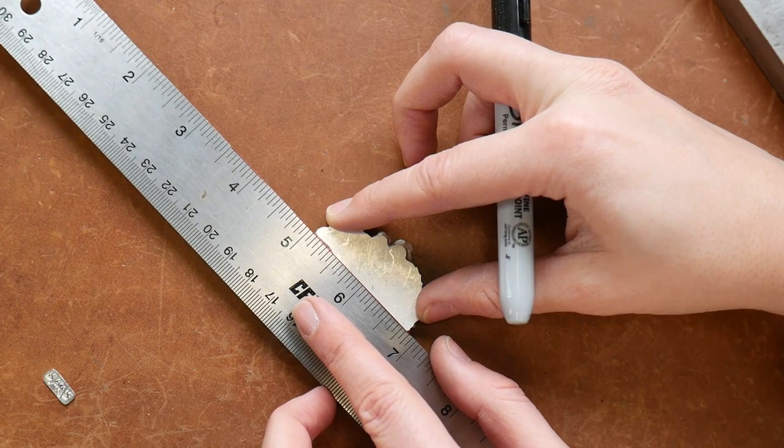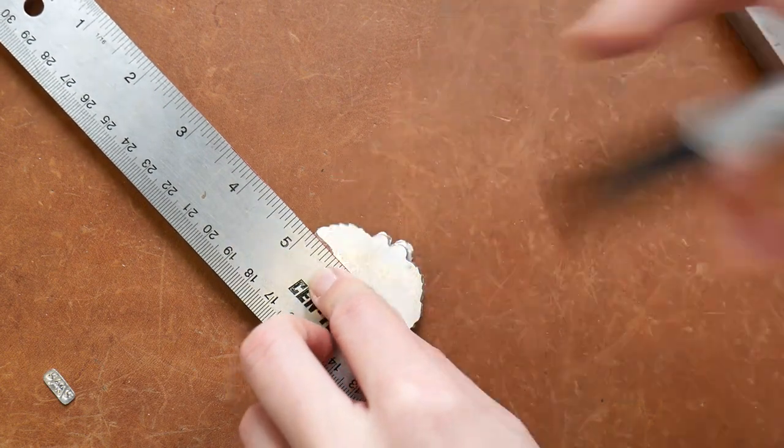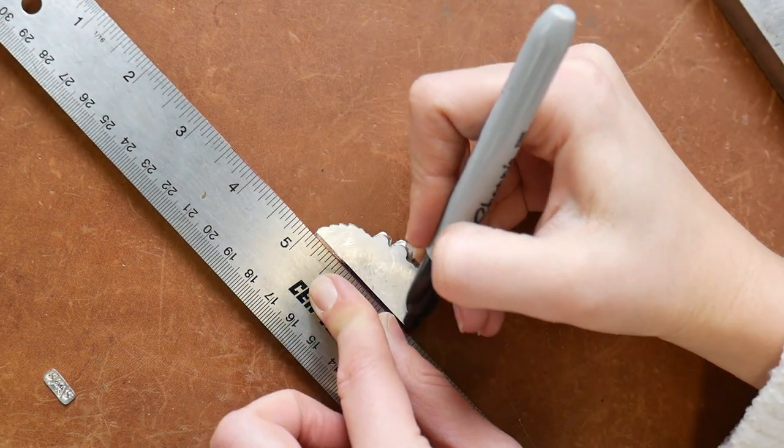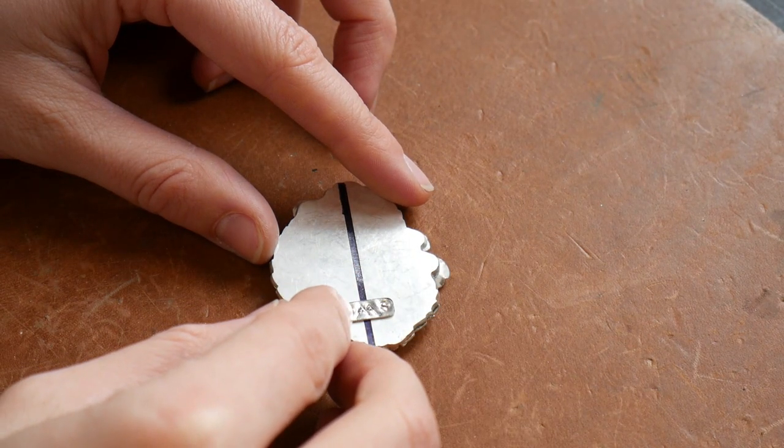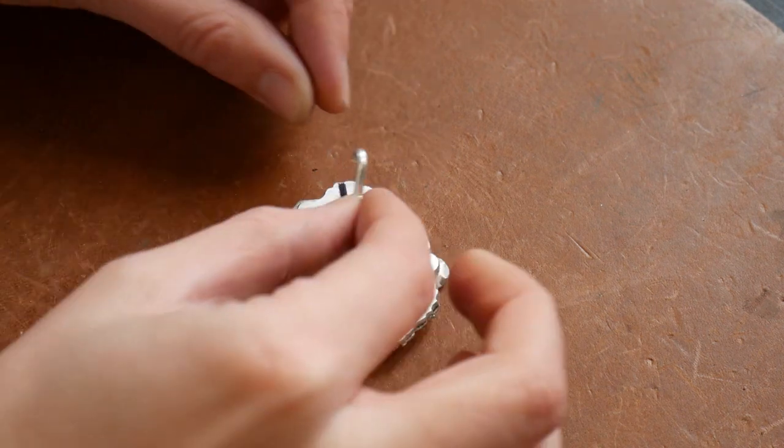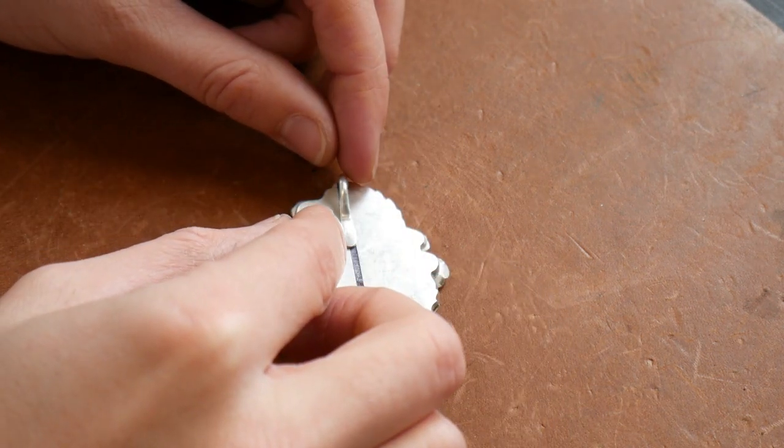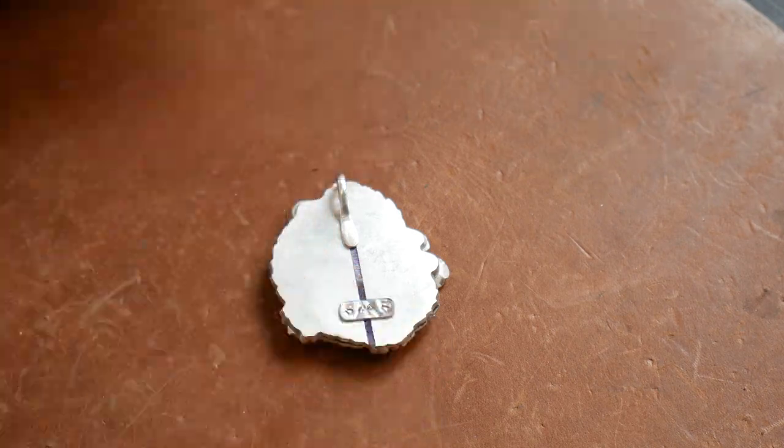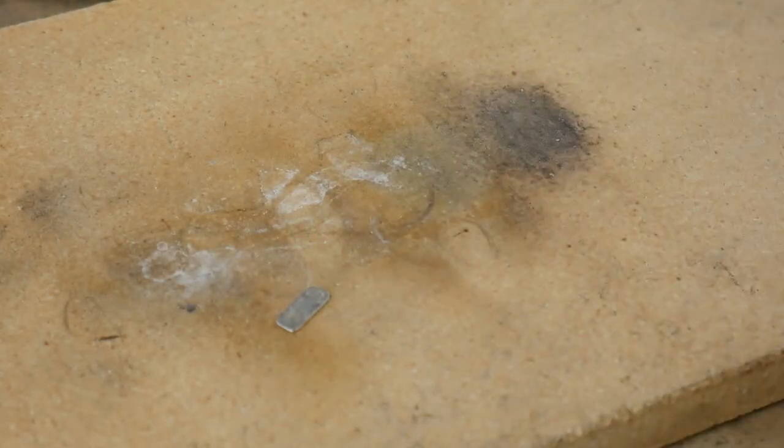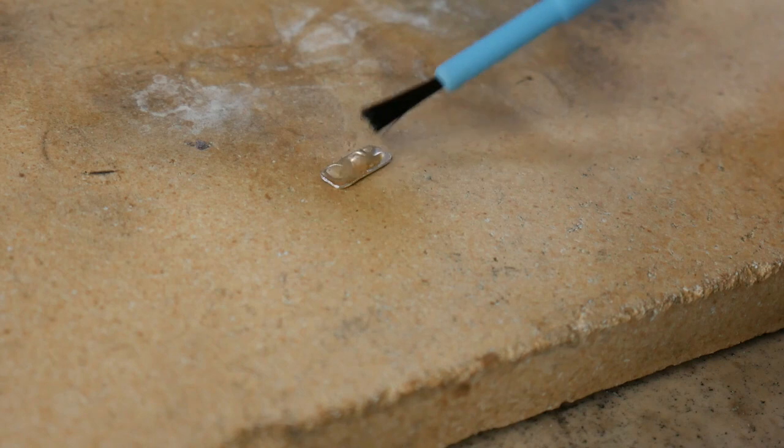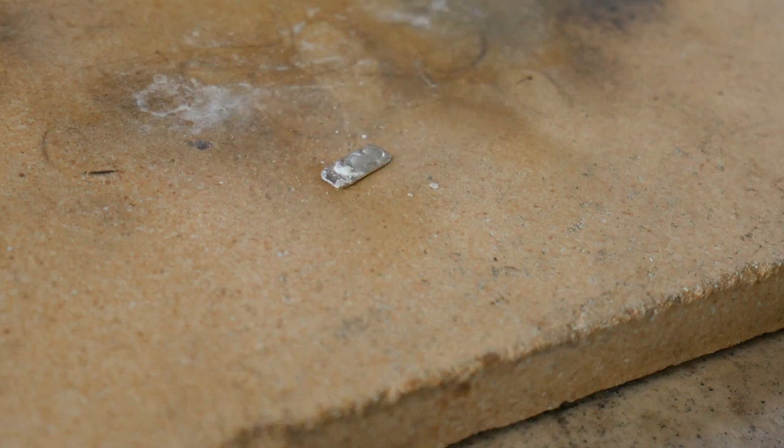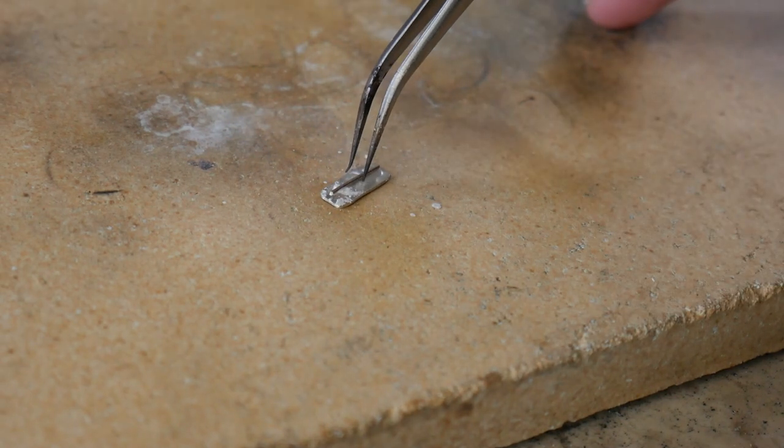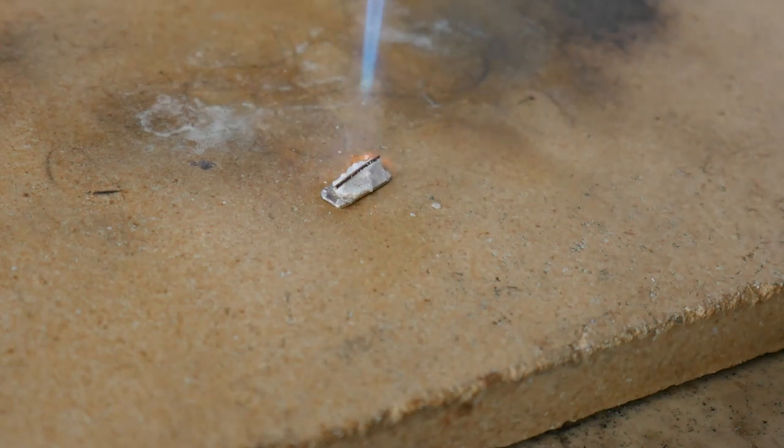Now I'm going to be using a ruler to once again draw a straight line on the back plate so I can line up the bail with my maker's mark. I'm going to be using the technique of sweat soldering to solder my maker's mark to my back plate. So all I'm going to do is just flux my piece and slowly heat it and then apply my solder to the back of my maker's mark. And I'll heat that again and allow the solder to flow.